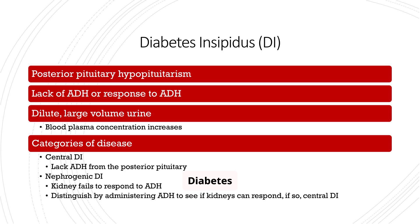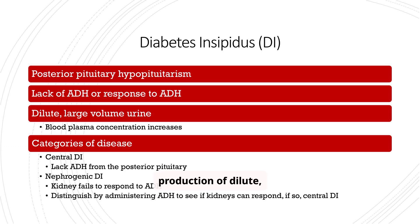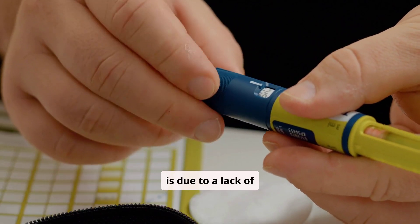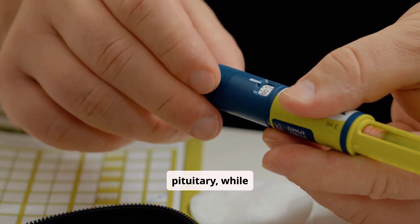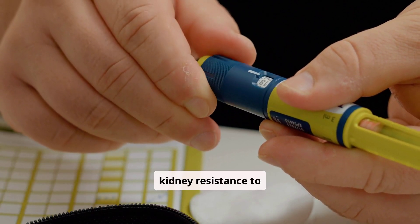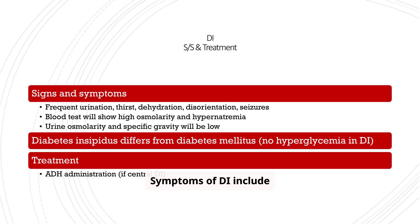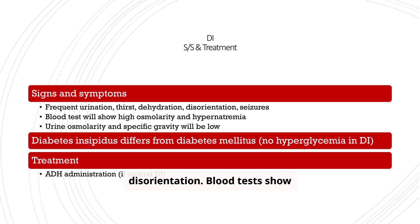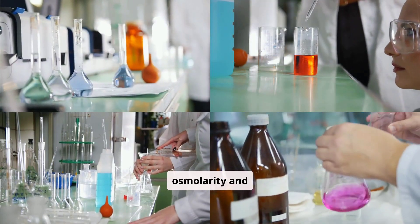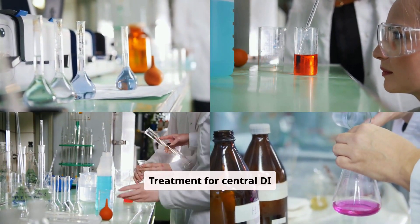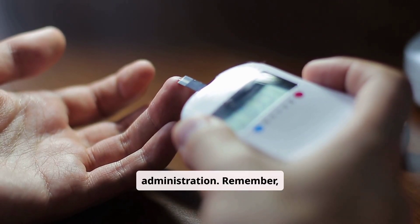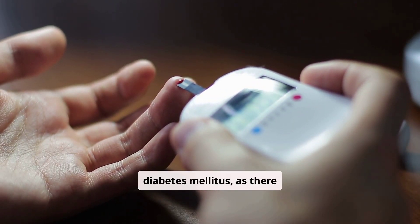Diabetes insipidus (DI) results from a lack of ADH or a failure to respond to it, leading to the production of dilute, large-volume urine. Central DI is due to a lack of ADH from the posterior pituitary, while nephrogenic DI is due to kidney resistance to ADH. Symptoms include frequent urination, thirst, dehydration, and disorientation. Blood tests show high osmolarity and hyponatremia, while urine tests show low osmolarity and specific gravity. Treatment for central DI involves ADH administration. Remember, DI is distinct from diabetes mellitus, as there is no hyperglycemia.